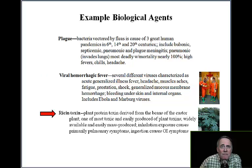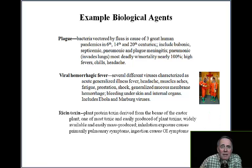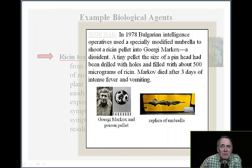Ricin toxin is a plant protein toxin derived from the beans of the castor plant — one of the most toxic and easily produced plant toxins. It is widely available and easily mass produced. Inhalation exposure causes primarily pulmonary symptoms, while ingestion causes gastrointestinal symptoms. In 1978, Bulgarian intelligence operatives used a specially modified umbrella to shoot a ricin pellet into Giorgio Markov, a dissident. A tiny pellet the size of a pinhead had been drilled with holes and filled with about 500 micrograms of ricin. Markov died after three days of intense fever and vomiting.